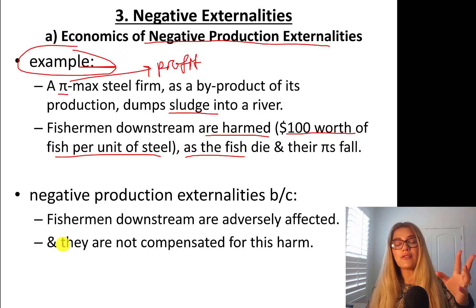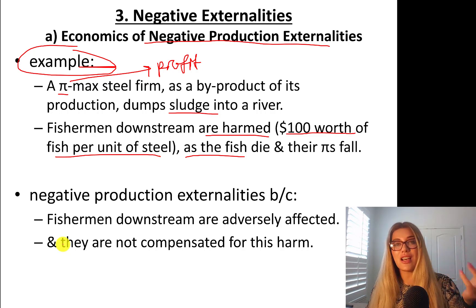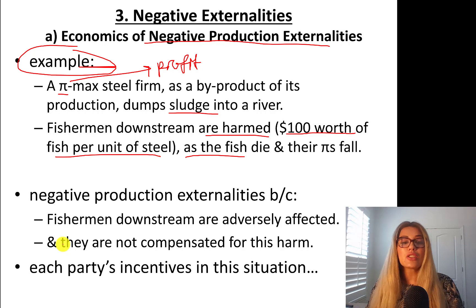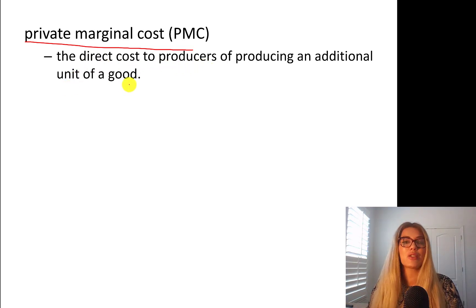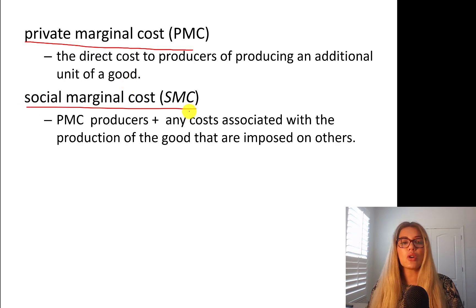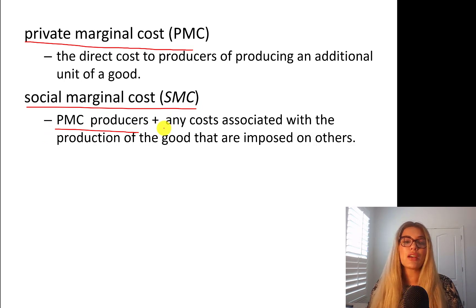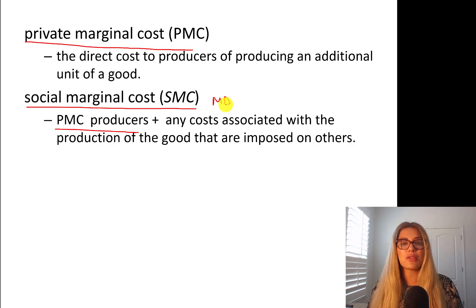The steel factory is profiting from this production but is not compensating for the loss to fishermen. So let's talk about each party's incentives. Private marginal cost is the direct cost to producers of producing an additional unit of goods — measured by the supply curve. Social marginal cost is private marginal cost plus any costs associated with the production of goods imposed on others. For instance, if you have a negative production externality, it's going to be plus the marginal damage you cause people.